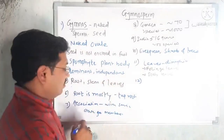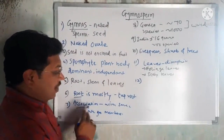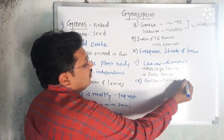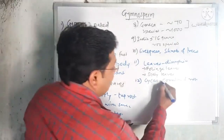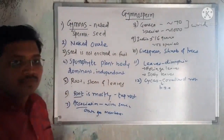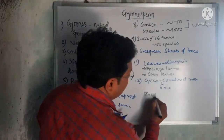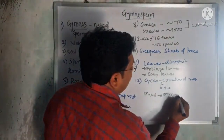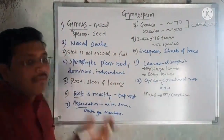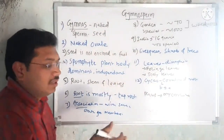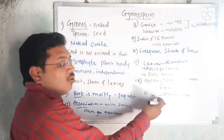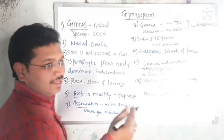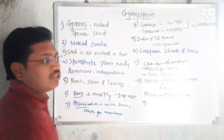Regarding root associations: in Cycas, the roots show a symbiotic association with blue-green algae. In Pinus, the roots show a symbiotic association with mycorrhiza. Mycorrhiza are fungi that attach to the roots of plants — vascular and avascular mycorrhiza are known. So Pinus has a close symbiotic association with mycorrhiza.